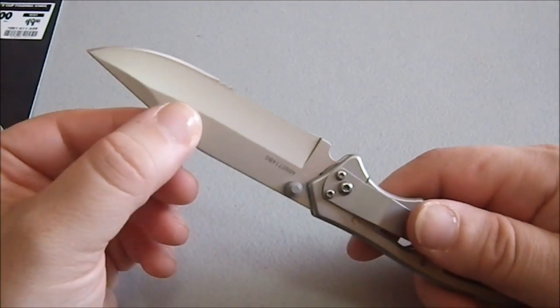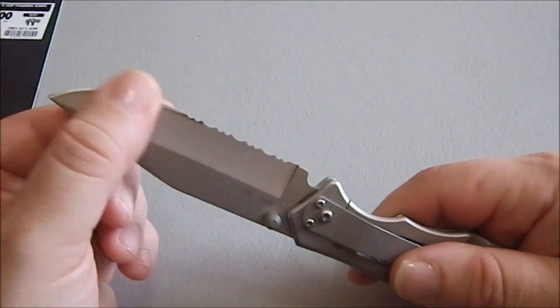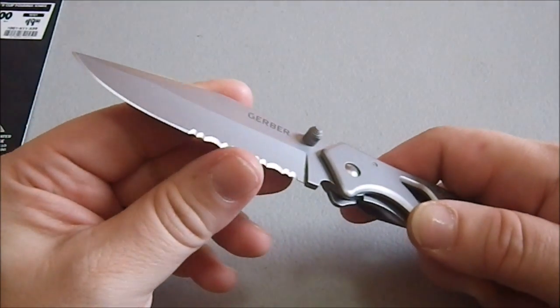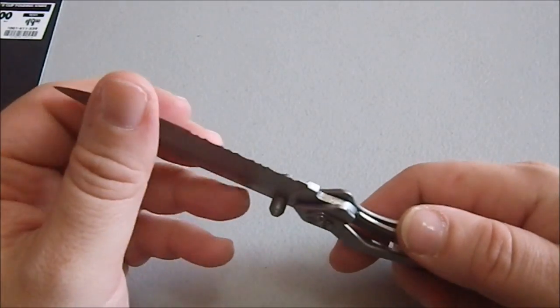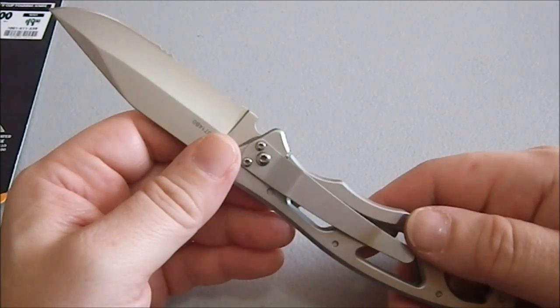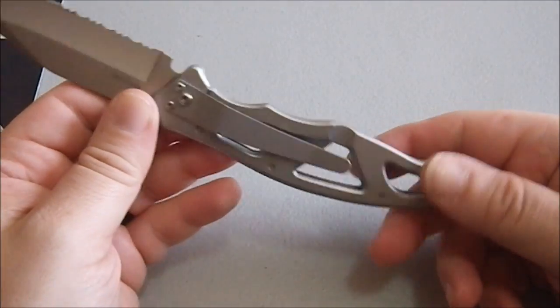It's got a flat grind with a nice swedge, hollow grind, secondary bevels. The serrations on this are quite nice. They've got a nice tooth to them and the blade comes out of the box reasonably sharp. We have thumb studs.